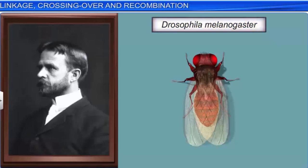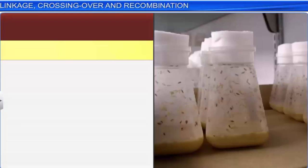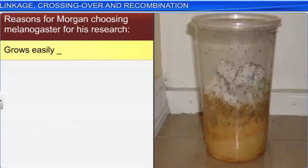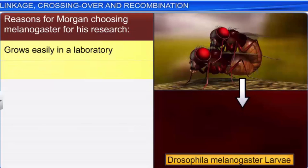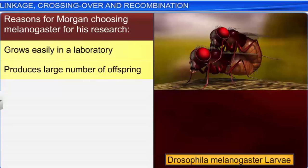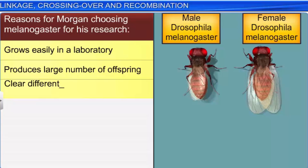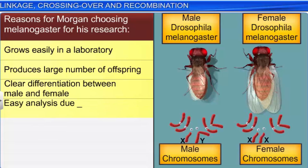There were several reasons for this. First, these flies could be easily grown in a simple synthetic medium in a laboratory. Morgan also found that a single mating in these flies produced a large number of offspring. Moreover, the male and the female flies were easily distinguishable and had only four pairs of chromosomes, making their analysis easier.